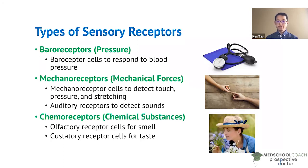Next, we have chemoreceptors that detect chemical substances. The sensory transduction process is based on binding different chemical compounds. As examples, we have olfactory receptors for smell, and we also have gustatory receptor cells or taste cells for taste.